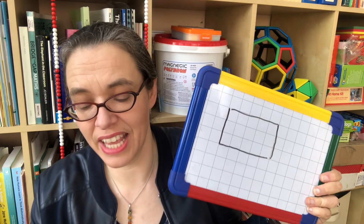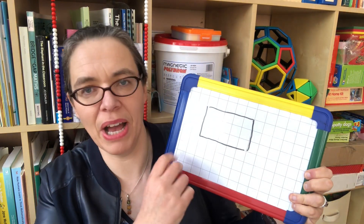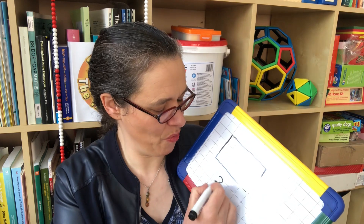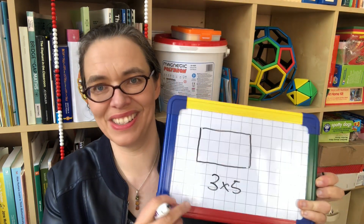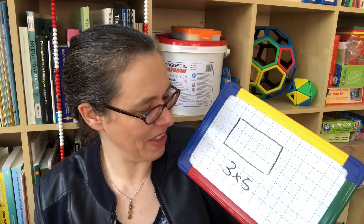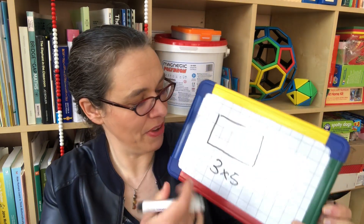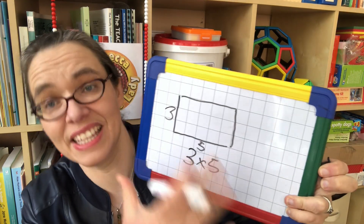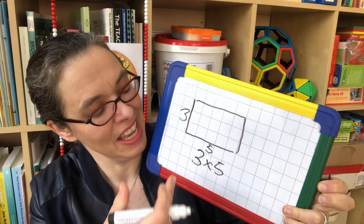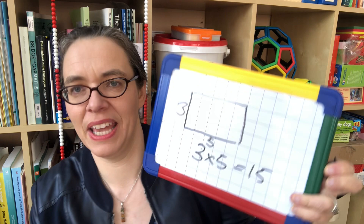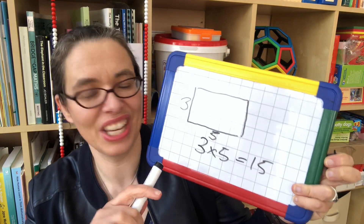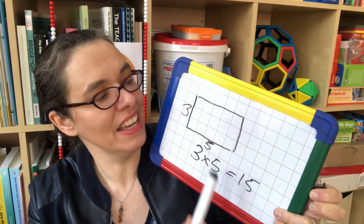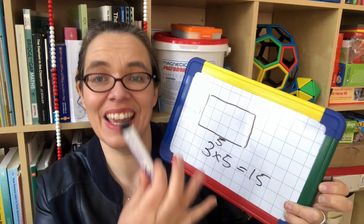An array does the same for multiplication and division. This intrinsically is the multiplication of 3 by 5. There's your 3, there's your 5. If you count up the number of squares — or objects, if you're doing this with objects — it's 15. So multiplication is shown by a rectangle where the numbers you're multiplying are the lengths of the sides, and your answer is the total number of objects or squares in your rectangle.